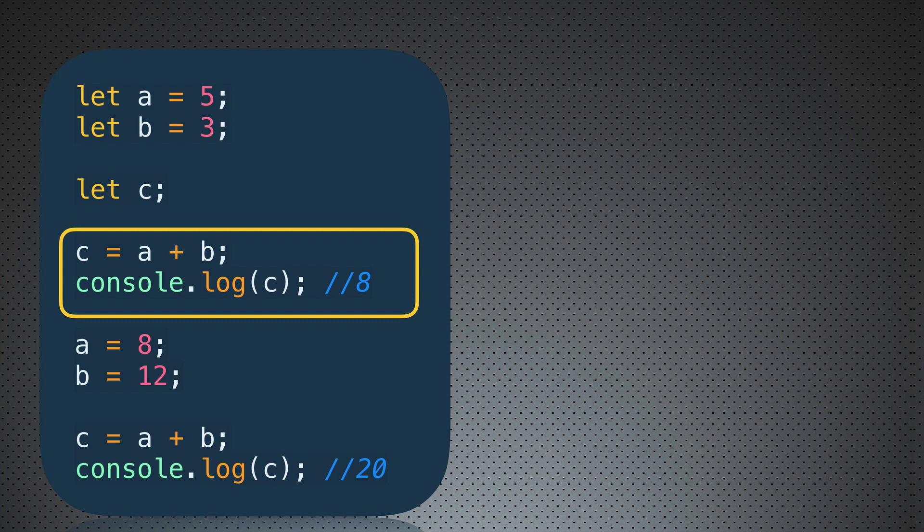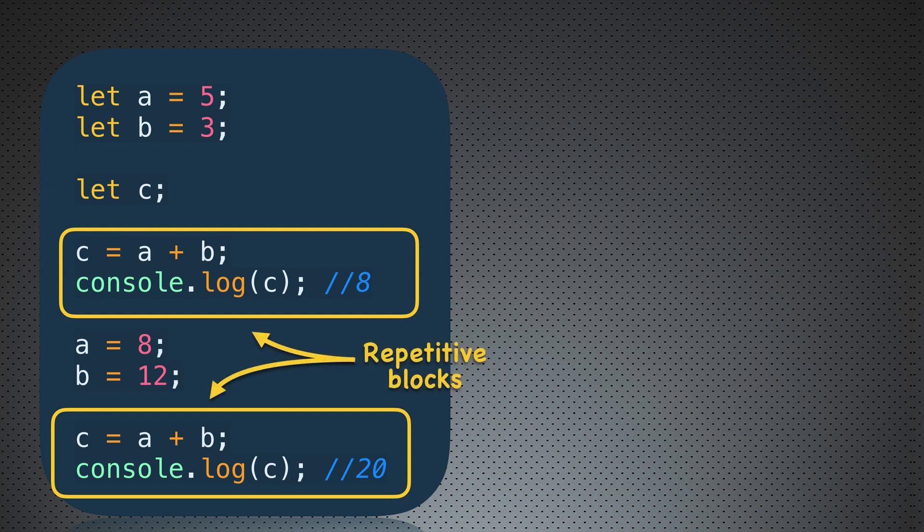Let's suppose that later on we want to sum values again. But now values of variables a and b are changed—they are 8 and 12, for example. We need to perform the same actions again: assign the result of a plus b to variable c and log c to the console. Of course we will get 20 in the console now. But you see that those two blocks of commands are redundant—they are actually equal. If you want to repeat the same actions again and again, you will simply repeat blocks of code. It is not efficient, and that's why functions were introduced.